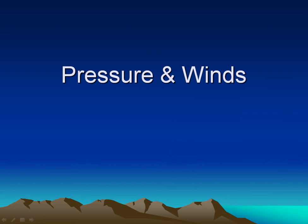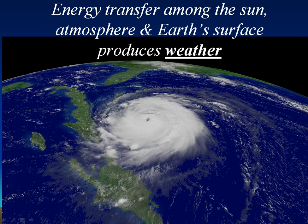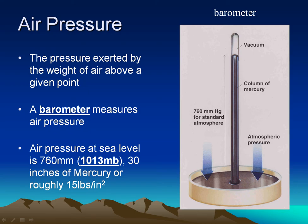Pressure and winds. Pressure is probably the most important part of describing weather, in part because it's what produces winds. As we've discussed before, energy transfer among the sun, atmosphere, and Earth's surface is what produces Earth's weather, including this hurricane that we see approaching Florida and passing over Cuba. Air pressure is a big part of that.